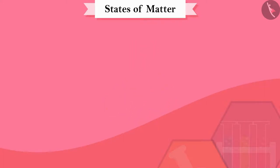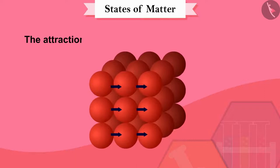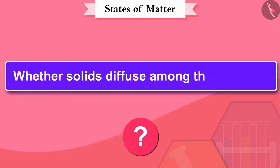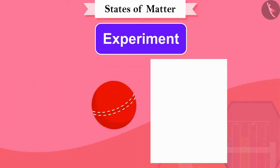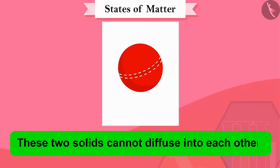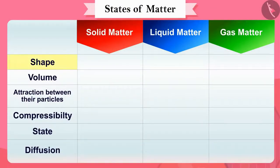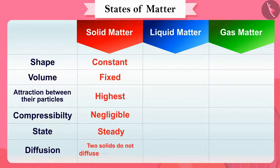This is because there is very little free space between particles in solid matter, and the attraction between those particles is the highest. Can solids diffuse among themselves? Let's find out: try to mix a ball with a paper — these two solids cannot diffuse into each other. Solids have constant shape and fixed volume, the attraction between their particles is highest, compressibility is negligible, and two solids do not diffuse into each other.